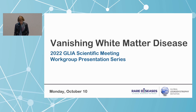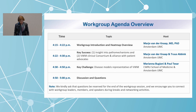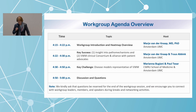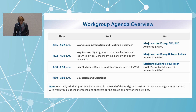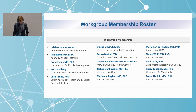The subject now will be Vanishing White Matter, and this is the program. I'll start with an introduction. Then it was my plan to have Truus Abing talk about the key successes, but she could not come, so I'll talk on her behalf. Then Marianne Budjani and Paul Teyser will talk about the key challenge. This is our membership, and it was great to have all of them involved and participate.